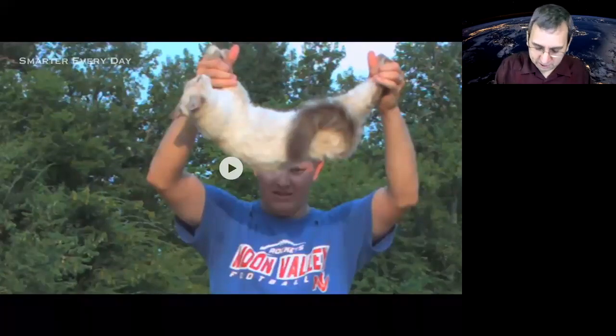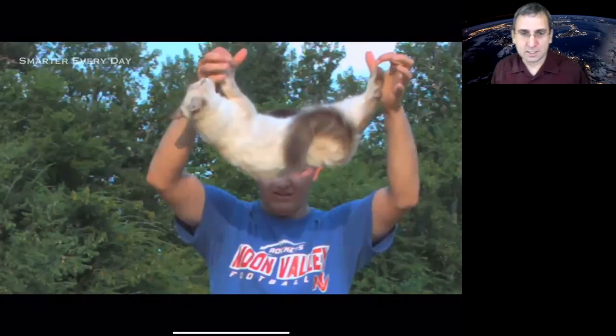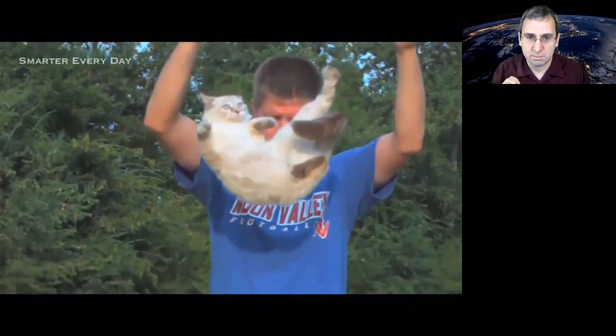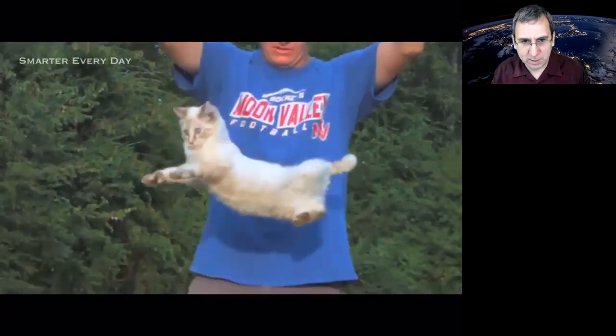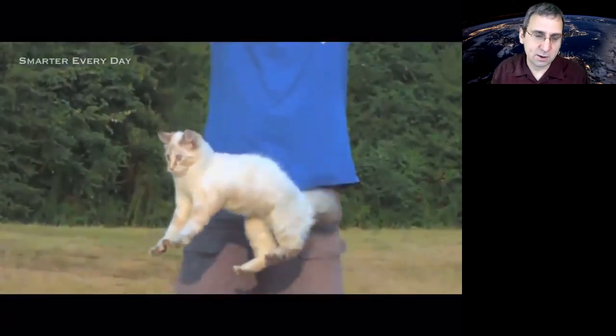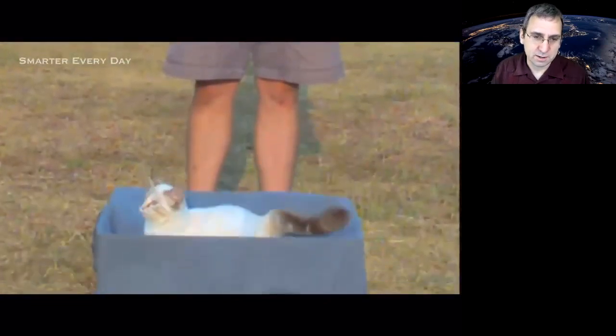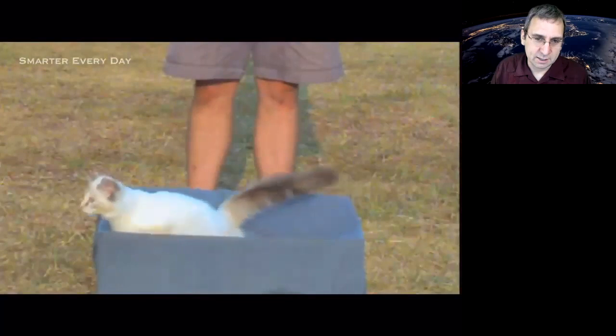He's being nice to the cat, but he's letting go of the cat upside down in slow motion. So the cat starts out with zero angular momentum. It starts with zero angular momentum and yet flips around. How can you turn if you have zero angular momentum, if you're a rigid body? Well, a cat isn't a rigid body.